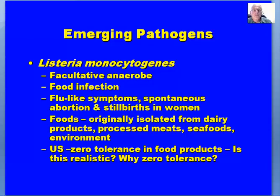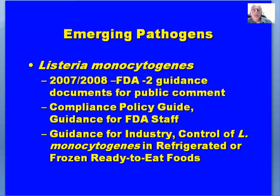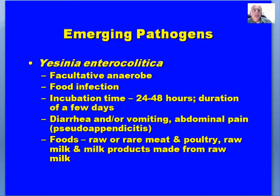From 2000 to 2008, the FDA had two guidance documents for public comment: a Compliance Policy Guide and guidance for FDA staff, and a guidance for industry for control of Listeria monocytogenes in refrigerated or frozen ready-to-eat foods. Another concern with Listeria monocytogenes is that it tends to be able to grow in refrigerated food products — at a very, very slow rate — but it can be present. Products of major concern involve recontamination or post-process contamination, particularly processed meat products.